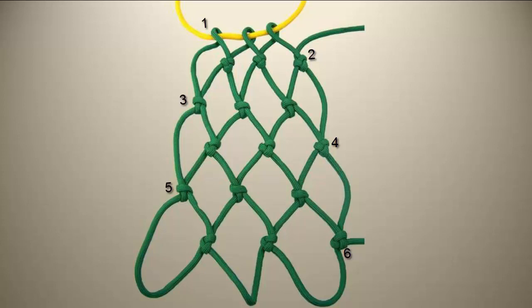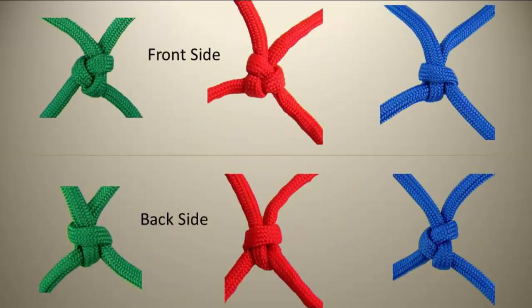The netting knot also has what I'm going to refer to as a front side and a back side. The front side is the side of the knot you see when tying the knot. And the back side of the knot is what you see on the row just finished after the netting has been turned over in preparation to tie the next row.